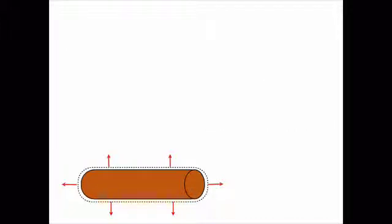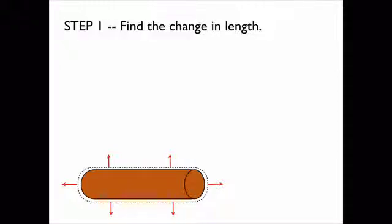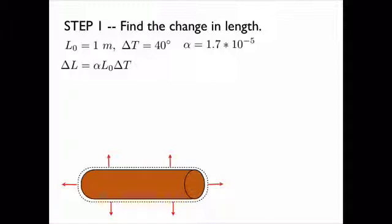First we'll find the change in length. We know the original length, the change in temperature, and I looked up the thermal linear expansion constant for copper. To find the change in length we just use this formula. We plug in the information from above and we find that the length increases by 6.8 times 10 to the negative 4 meters.